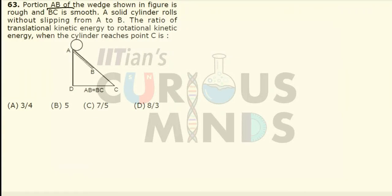Portion AB of the wedge as shown in the figure is rough and BC is smooth. A solid cylinder rolls without slipping from A to B. We have to find the ratio of translational kinetic energy to rotational kinetic energy when the body reaches point C. From A to B there will be pure rolling motion, so a certain velocity is gained. From B to C there is only a smooth surface.